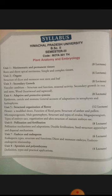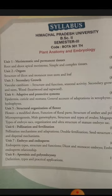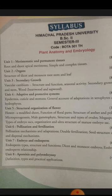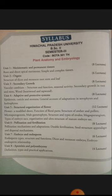BSC second year — the course code is VWACA BOT 201 instead of 301. The first unit is meristematic and permanent tissue, second is organ system, third is secondary growth, fourth is adaptive and protective systems, fifth is structural organization of flowers, pollination and fertilization, seventh is embryo structure and endosperm structure, and last is apomixis and polyembryony.